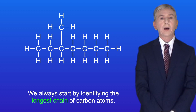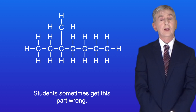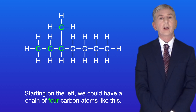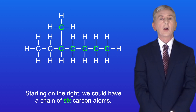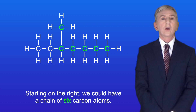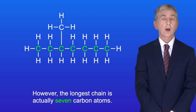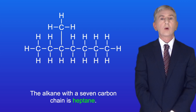We always start by identifying the longest chain of carbon atoms, and students sometimes get this part wrong. Starting on the left we could have a chain of 4 carbon atoms like this. Starting on the right we could have a chain of 6 carbon atoms. However the longest chain is actually 7 carbon atoms and here they are.